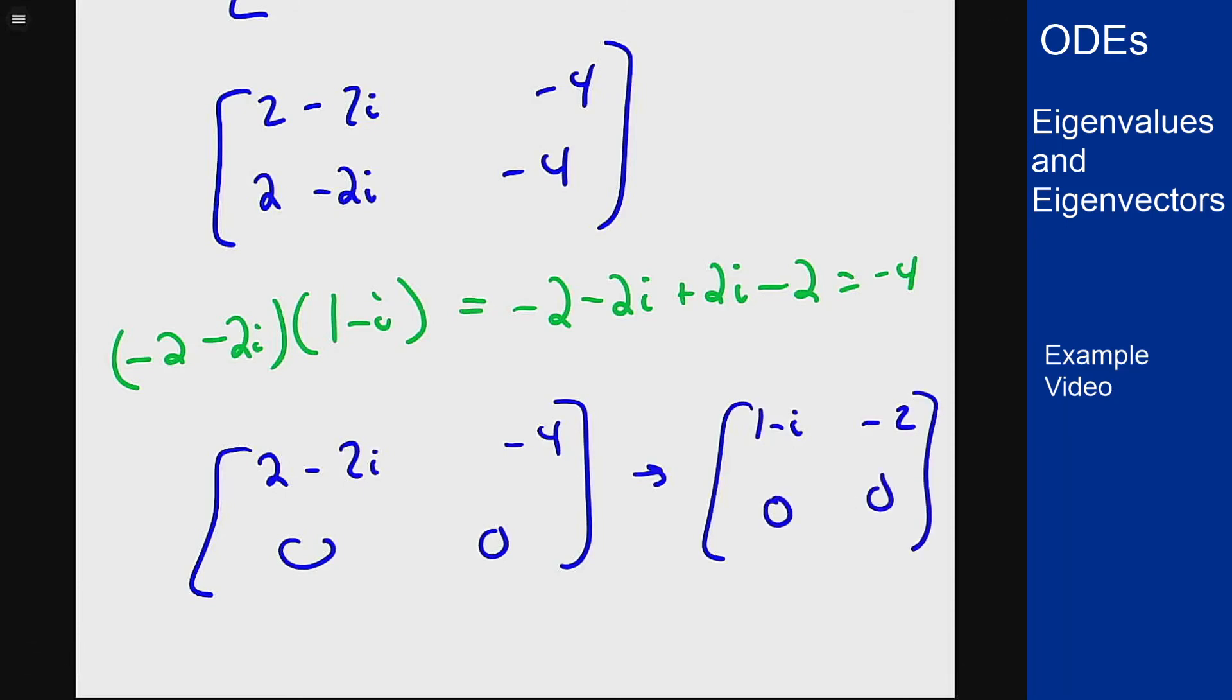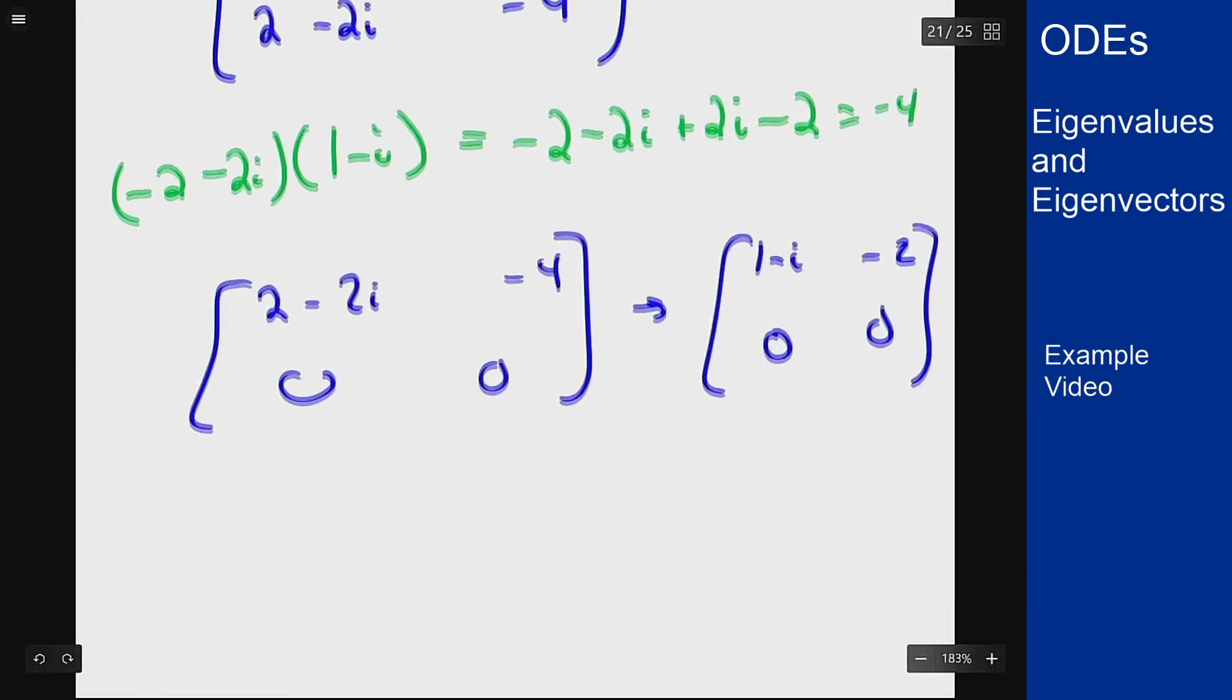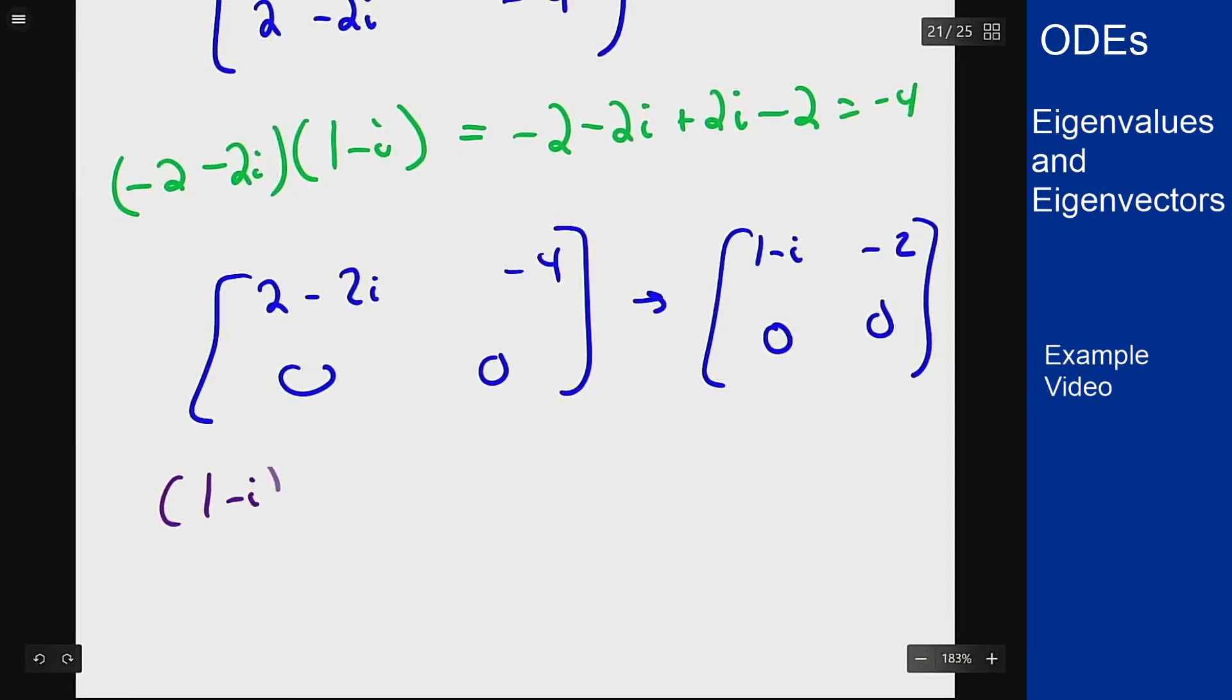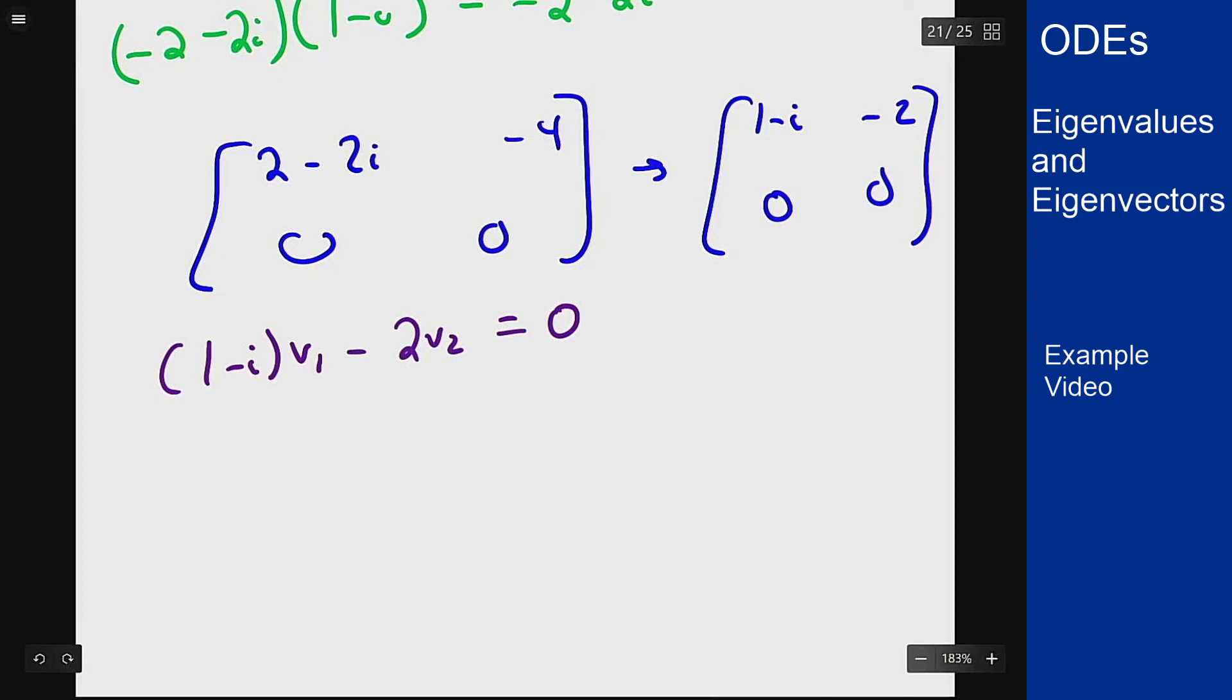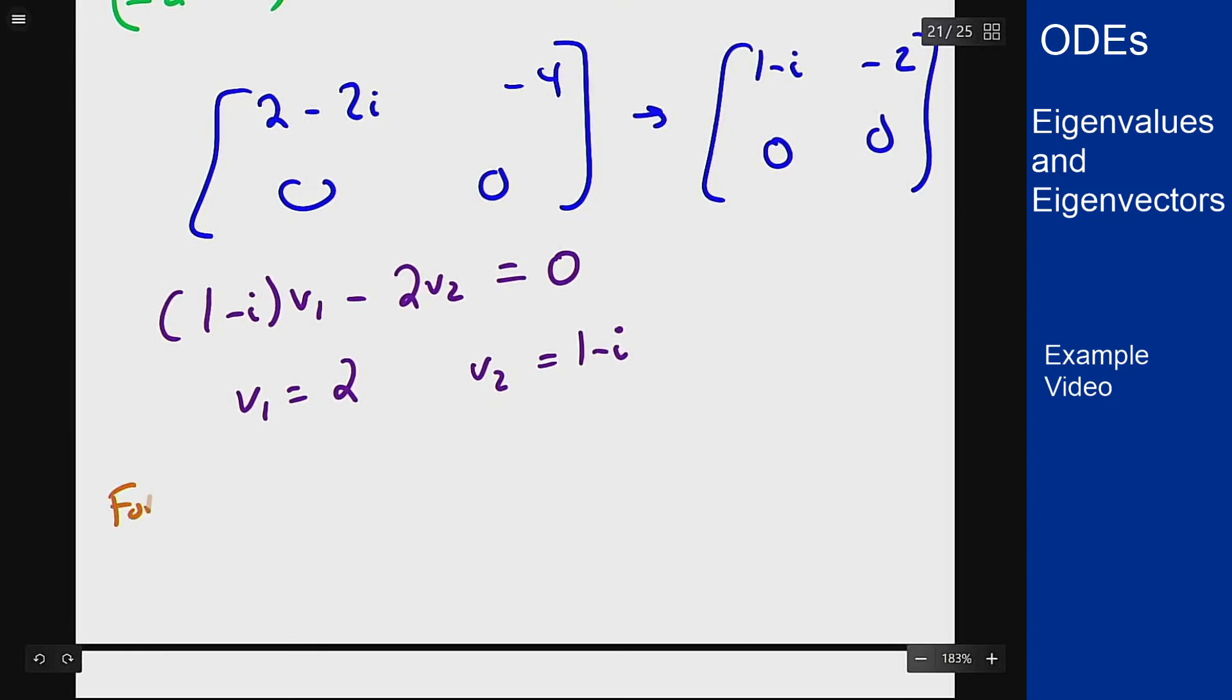So if I want to solve this equation with a non-zero solution, I want 1 minus i times v1 minus 2 v2 equals 0. Now I can do this however I want. One easy way to pick numbers here is to sort of swap the two numbers. So if I pick v1 to be 2 and v2 to be 1 minus i, then we're good because both terms here will then be 1 minus i times 2. So for eigenvalue negative 1 plus 2i you have eigenvector 2, 1 minus i.